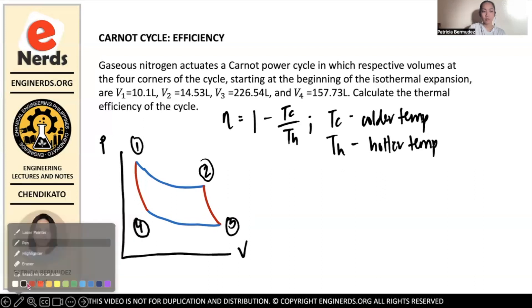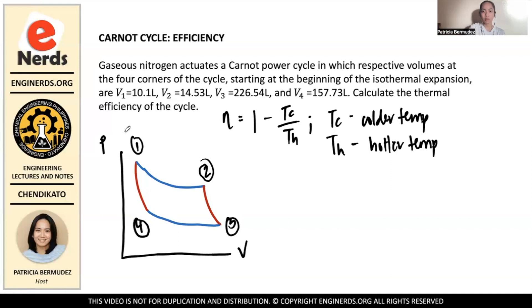And then from here, we can relate temperature and volume by first listing down what are the constants at the different stages. So we know that from stage one to stage two, the process is isothermal expansion. And in an isothermal process, whether expansion or compression, we know that the temperature is constant. So from here, we can conclude that from point one to point two, the temperature is the same because it is isothermal. Therefore, we can say that T1 is equal to T2.